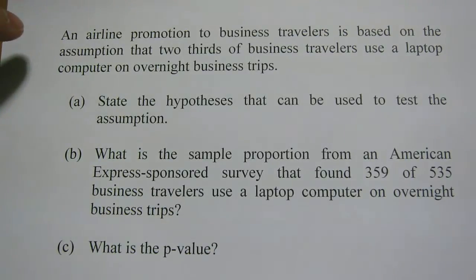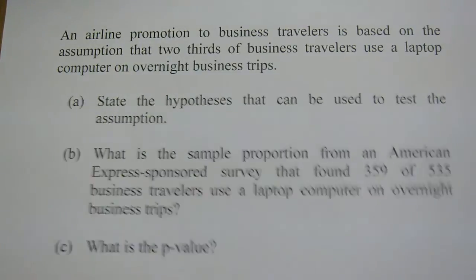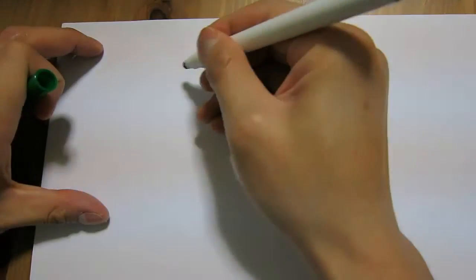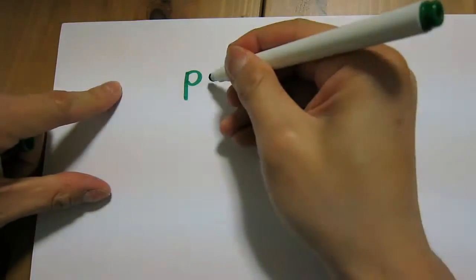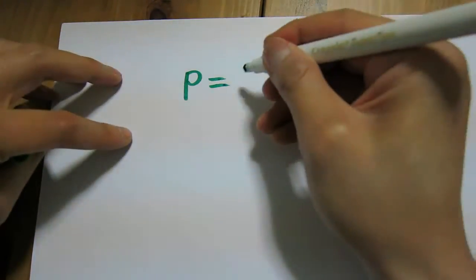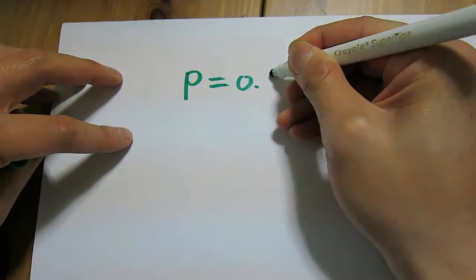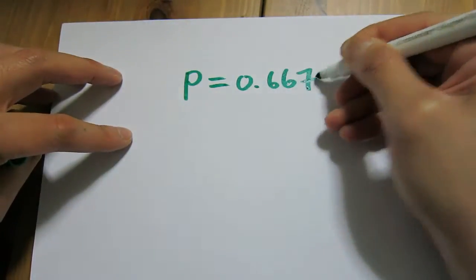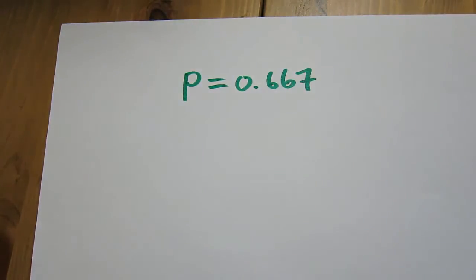We're told that there is an assumption that two-thirds of business travellers use a laptop computer on business trips. So how do we set up the hypotheses? Let's write down the claim. The claim is that the population proportion is assumed to be two-thirds — we'll round it to three decimal places, and we get 0.667.